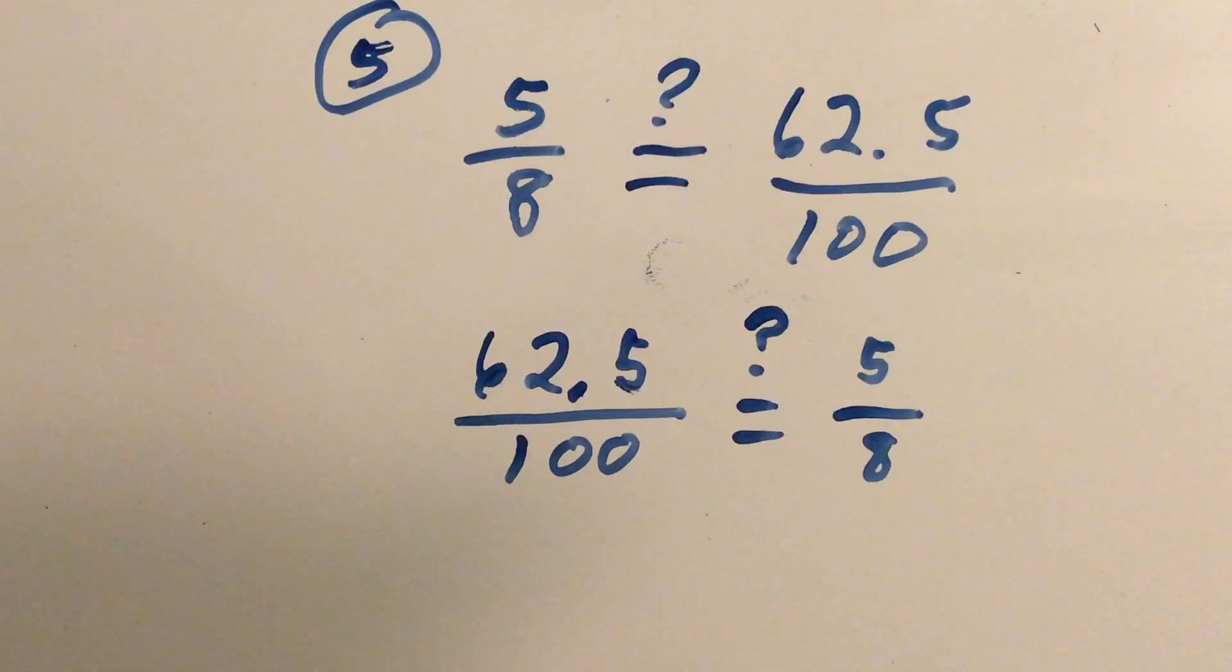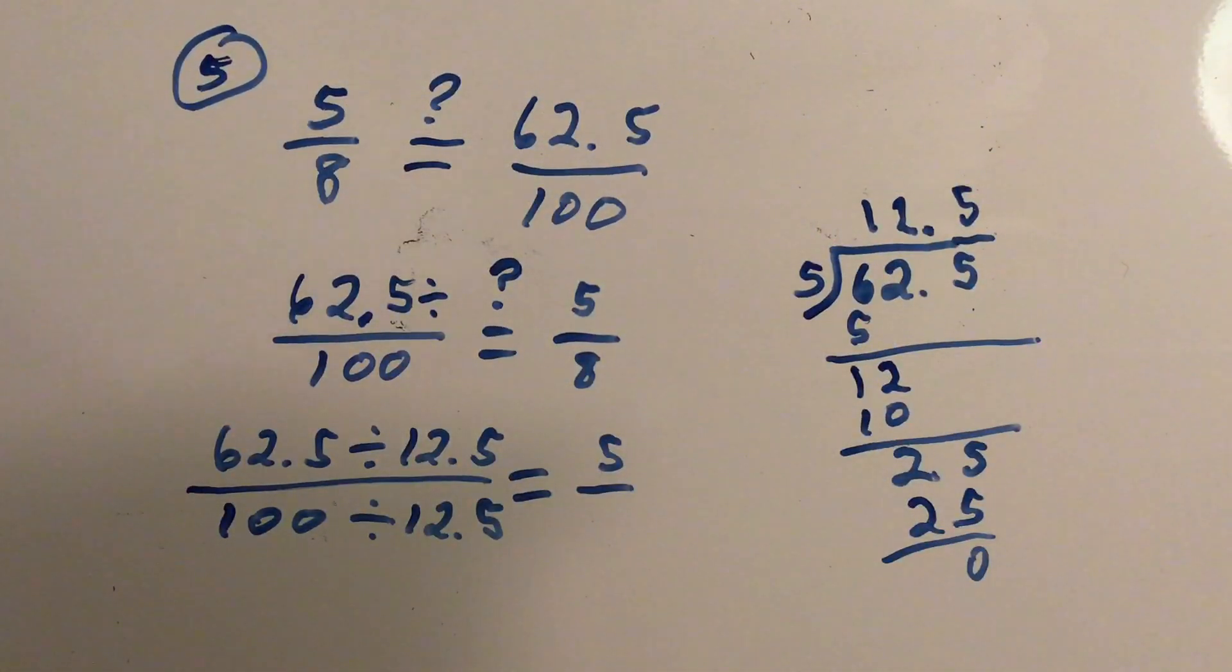This time, I'm going to use division to figure out if these two ratios are equivalent. Since we found out that 62 and 5 tenths divided by 12 and 5 tenths is equal to 5, now we need to find out if the denominator, 100, divided by 12 and 5 tenths is equal to 8. Let's find out.